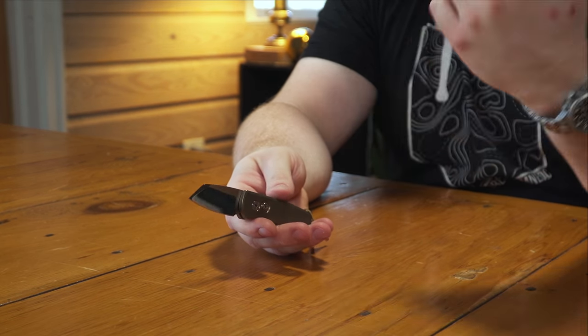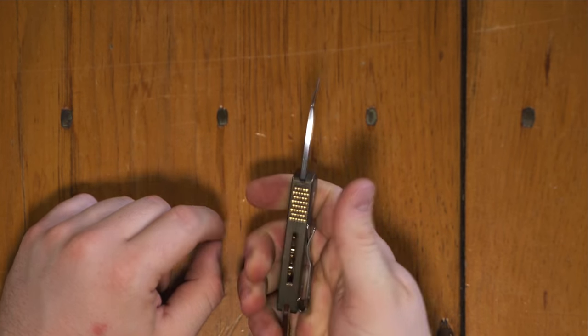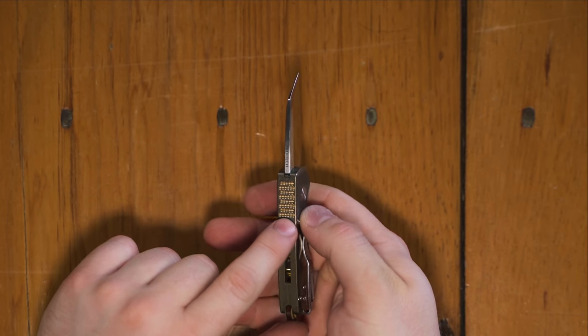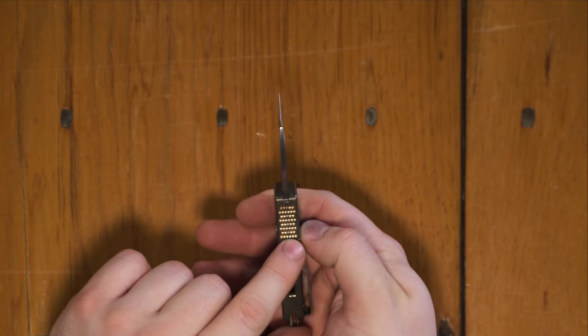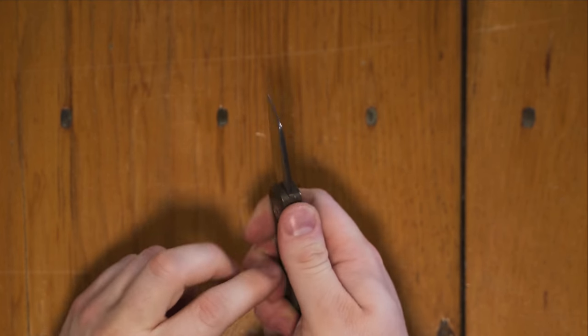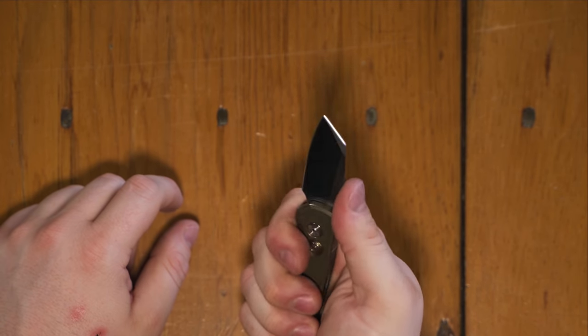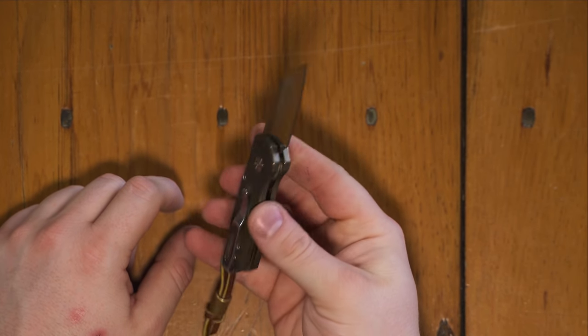One thing that my buddy Jamie pointed out to me is that I didn't even talk about the jimping on the back here. It's such a unique pattern for the jimping. You don't typically see that. It's almost like scalloped out of there. Like, I don't know how to cheese grater style. I don't know what to call it, but this thing just feels great. It's tiny, but it is mighty. It's a really, really cool knife.